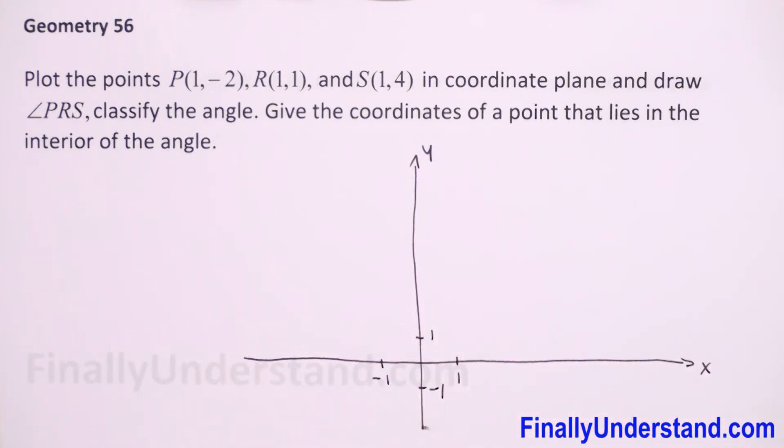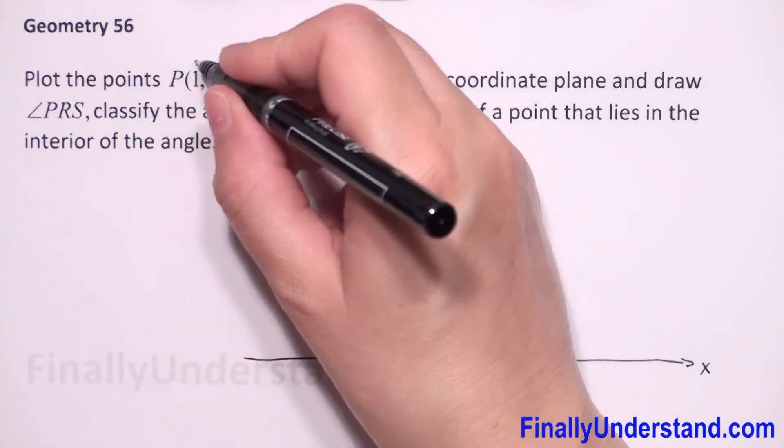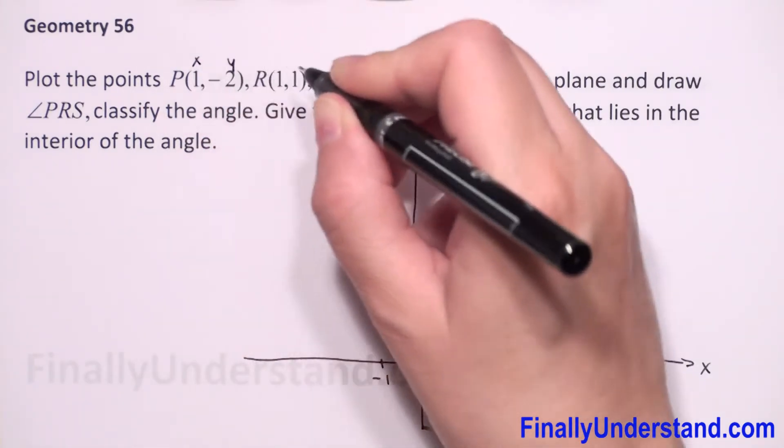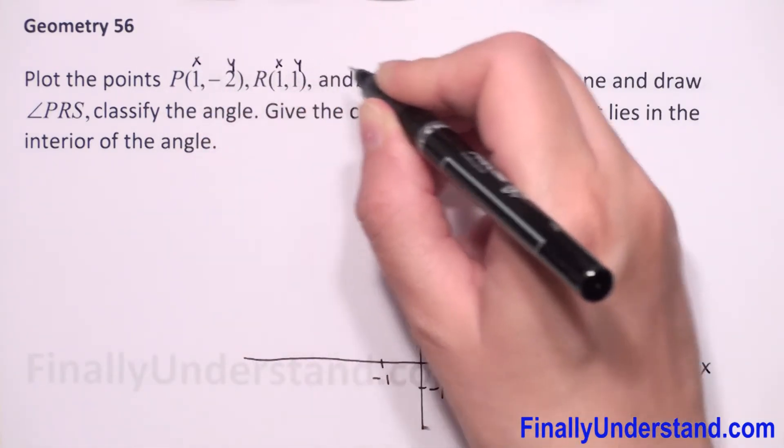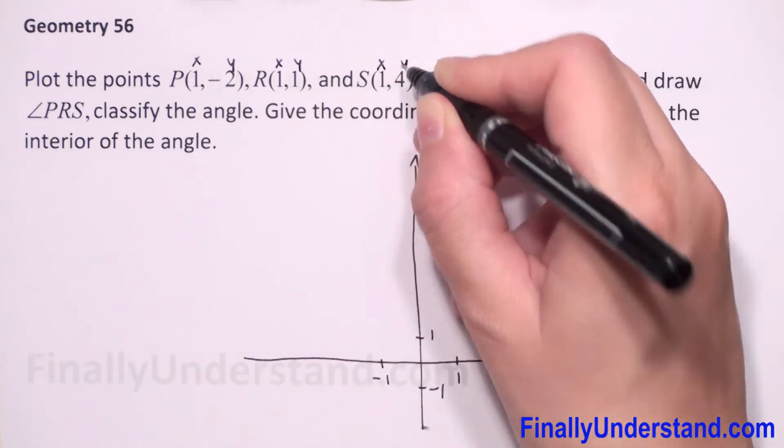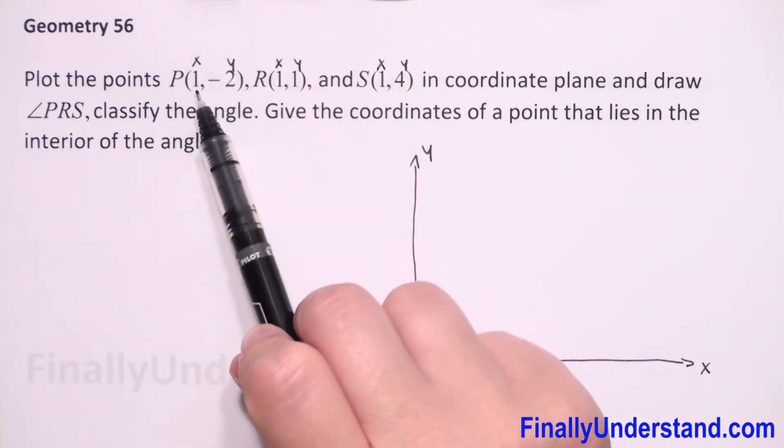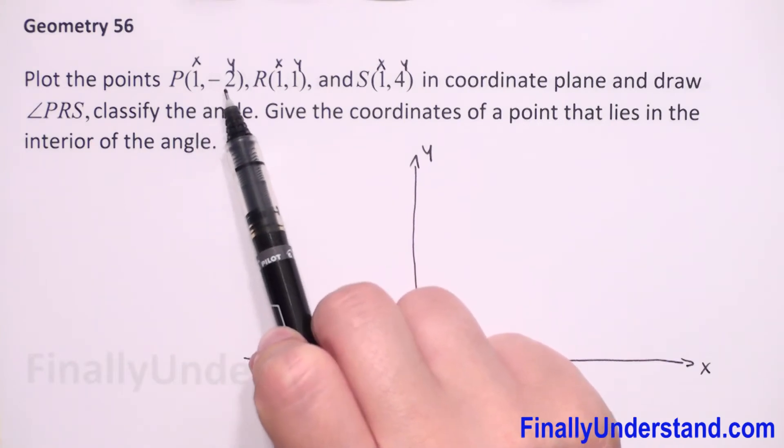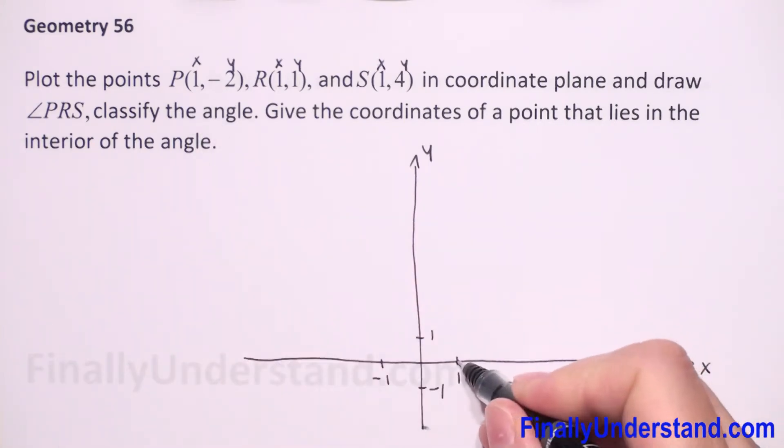We know that the first coordinate is x, the second is y. The first point P has coordinates (1, -2) - one on the x-axis and negative two on the y-axis, so we have to go down. This is our point P.